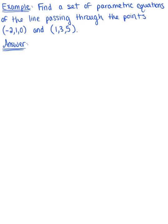Find a set of parametric equations of the line passing through the two points given. So to get started here, let's simply label our points. We'll say this is point A and this is point B.